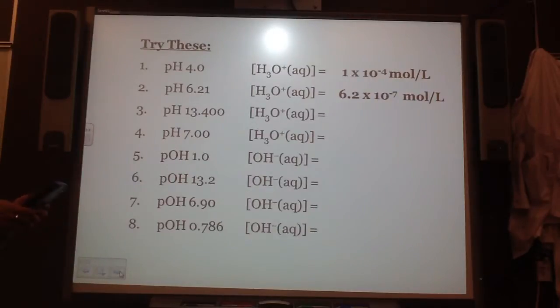Try the next where you go 10 to the power of negative 13.4. You get like 3.981 times 10 to the negative 14. pH of 7, you should almost be able to just not put that in your calculator, but see the pattern? Well, that's going to be 1 times 10 to the negative 7 mole per liter.